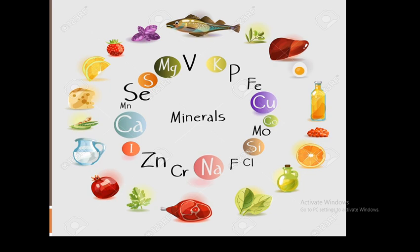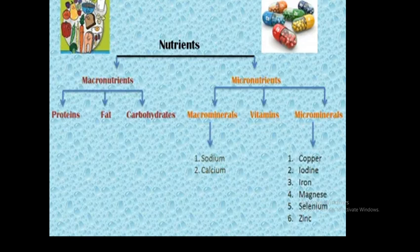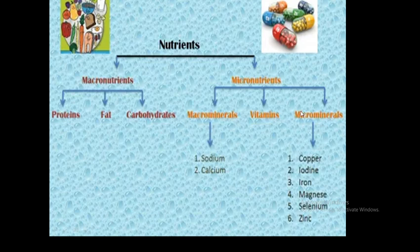Nutrients are divided into macronutrients and micronutrients. Macronutrients are those which the body needs in large amounts, like protein, fats, and carbohydrates. Micronutrients are those nutrients that are needed in small amounts, like macro minerals, vitamins, and micro minerals. So macro means large amounts, micro means small amounts.